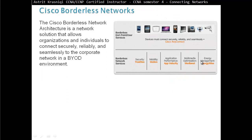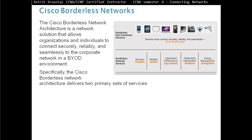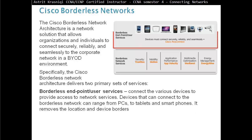Cisco Borderless Network Architecture. The Cisco Borderless Network Architecture is a network solution that allows organizations and individuals to connect securely, reliably, and seamlessly to the corporate network in a Bring Your Own Device environment. It delivers two primary sets of services. Borderless endpoint user services connect the various devices to provide access to network services. Devices that can connect range from PCs to tablets and smartphones, removing location and device borders.